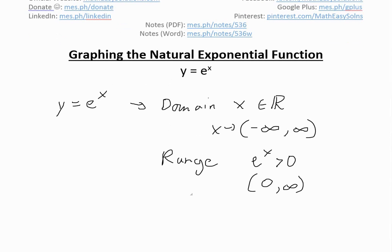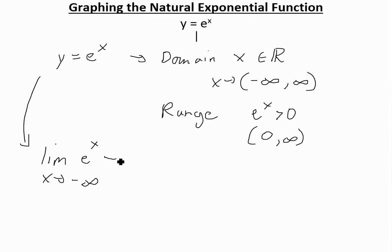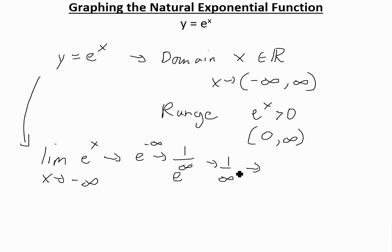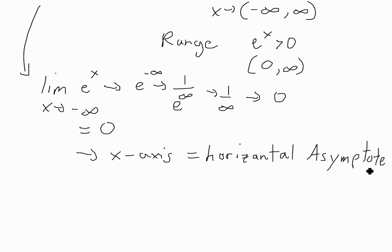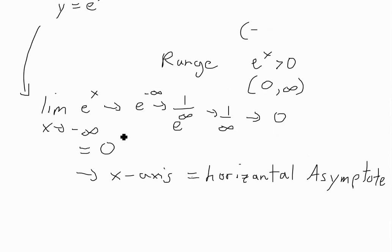Now I'll go over the asymptote. What you could do is check what happens when the limit as x approaches negative infinity of e to the x. When you plug it in — using an arrow because it's a limit, we're approaching it — it'll be e to the power of negative infinity. Let's flip it around: that's 1 over e to the infinity. The bottom approaches infinity, so 1 divided by anything really large is approaching zero. So this equals zero as you go to the left side, making the x-axis a horizontal asymptote.